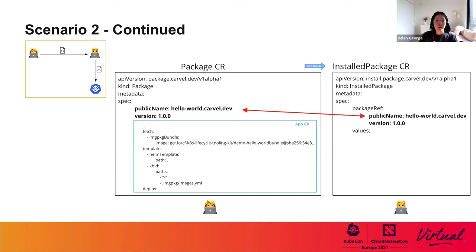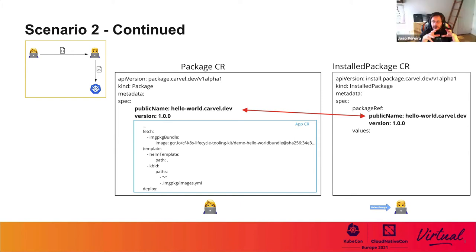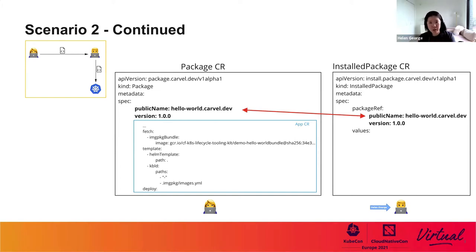Package CR wraps AppCR and adds additional metadata like a public name and the version of the software. AppCR was designed for the use case where I write the software and I deploy it, whereas Package CR and InstalledPackage CR were designed with 'I write the software and you deploy it' in mind. Package CR is created by the software producer and acts as a definition of your application, and InstalledPackage CR is created by the software consumer and is used to instantiate the application. There's a division between them because we wanted to separate out the definition and the instantiation, which abstracts away the details of how to install an application for the software consumer.